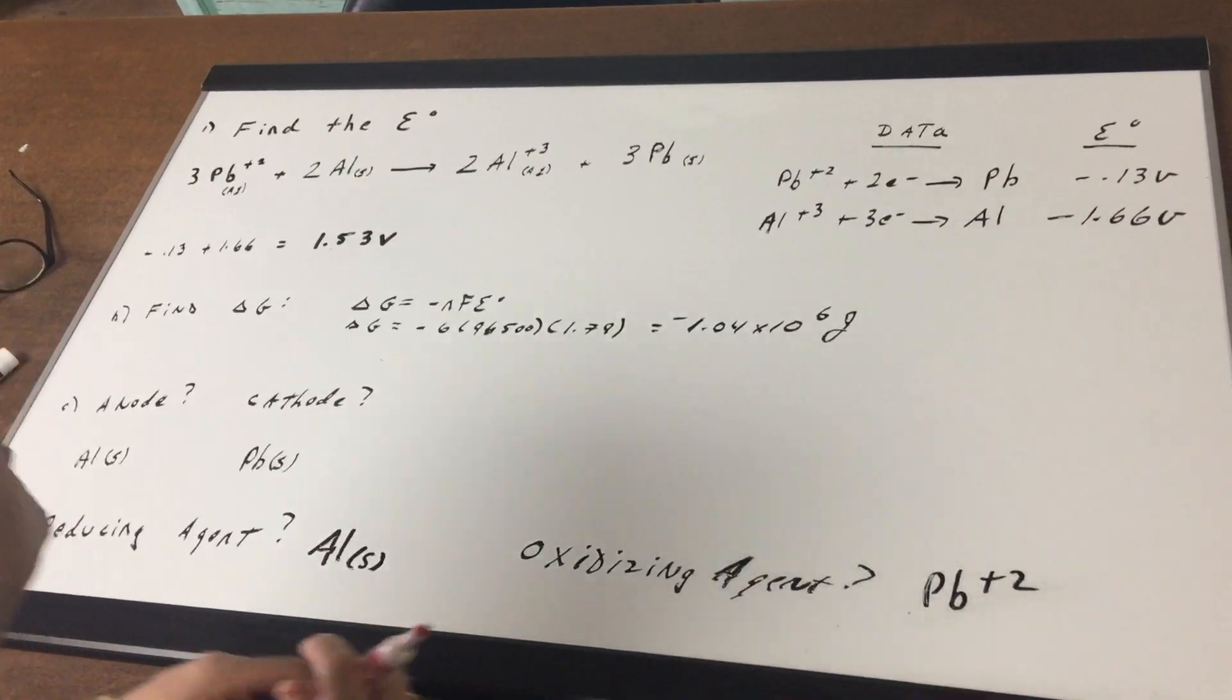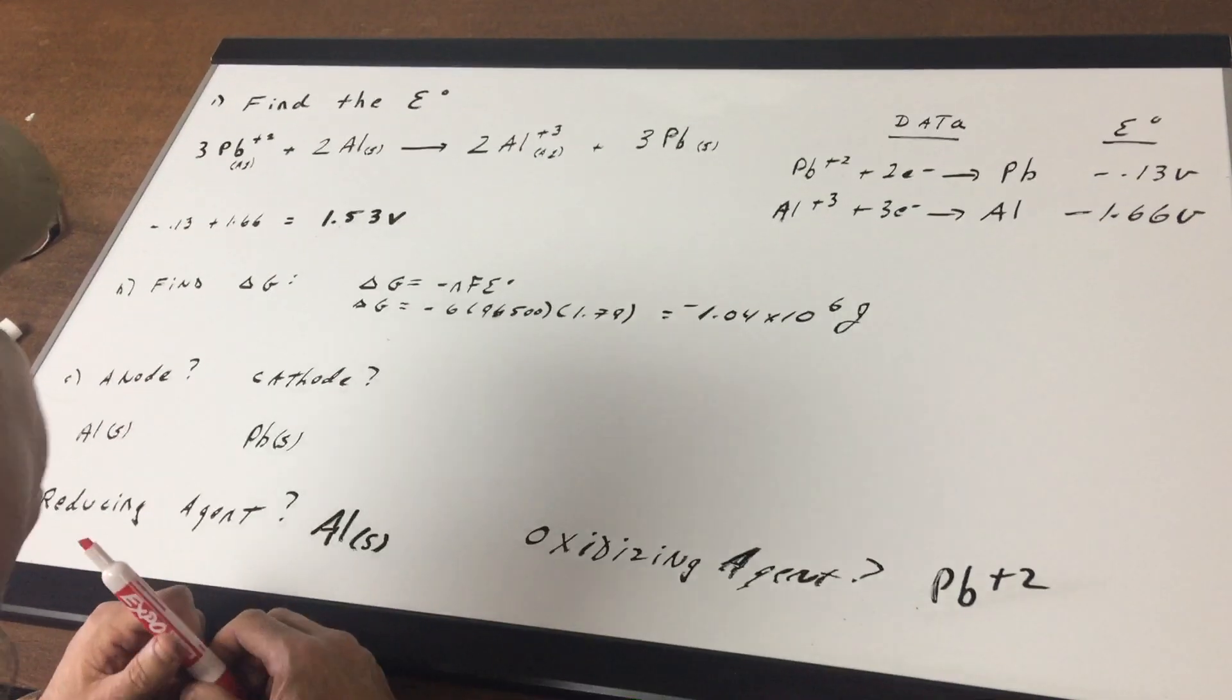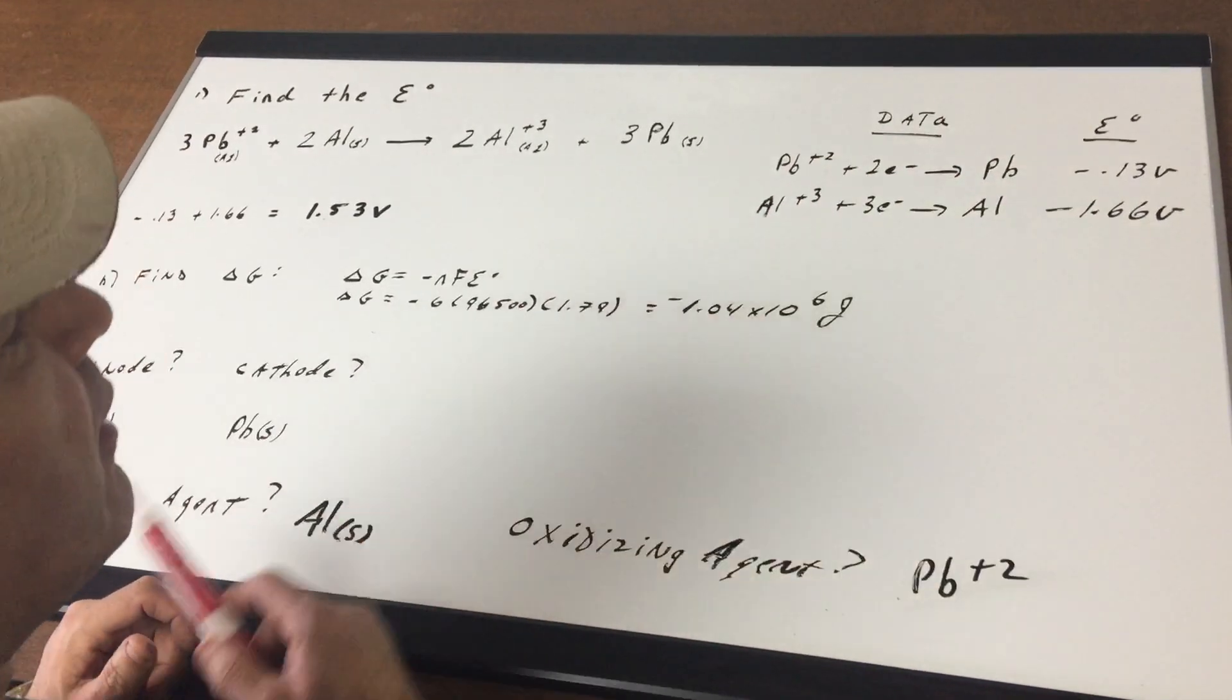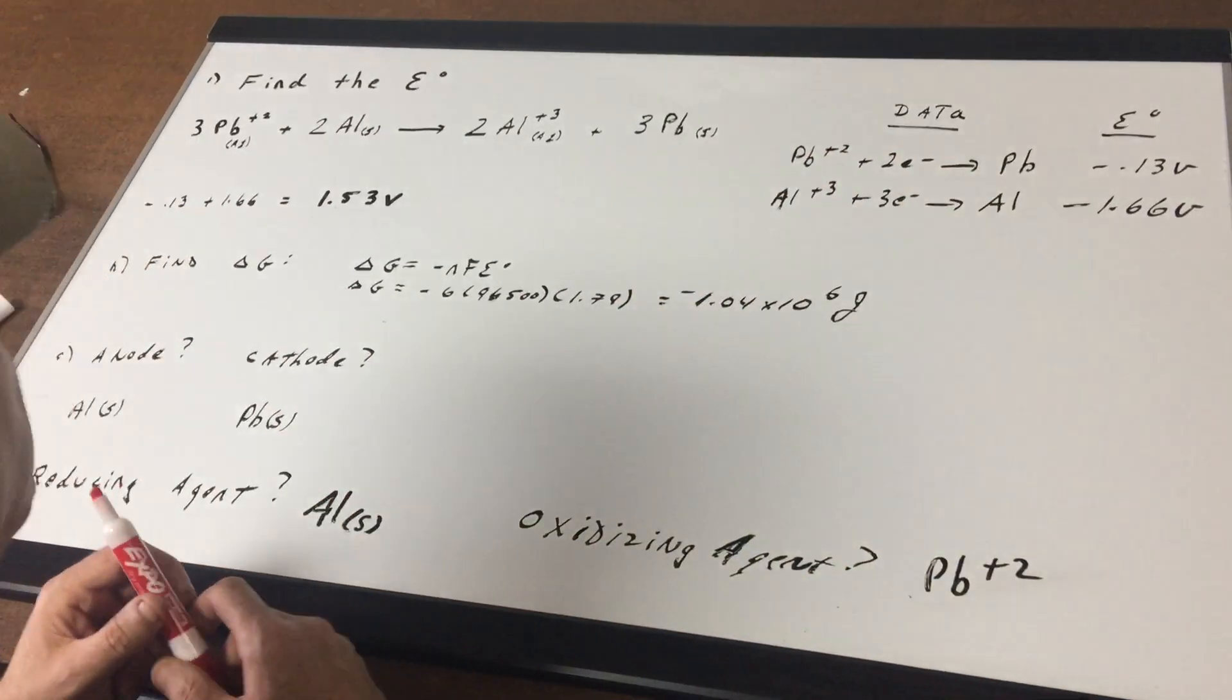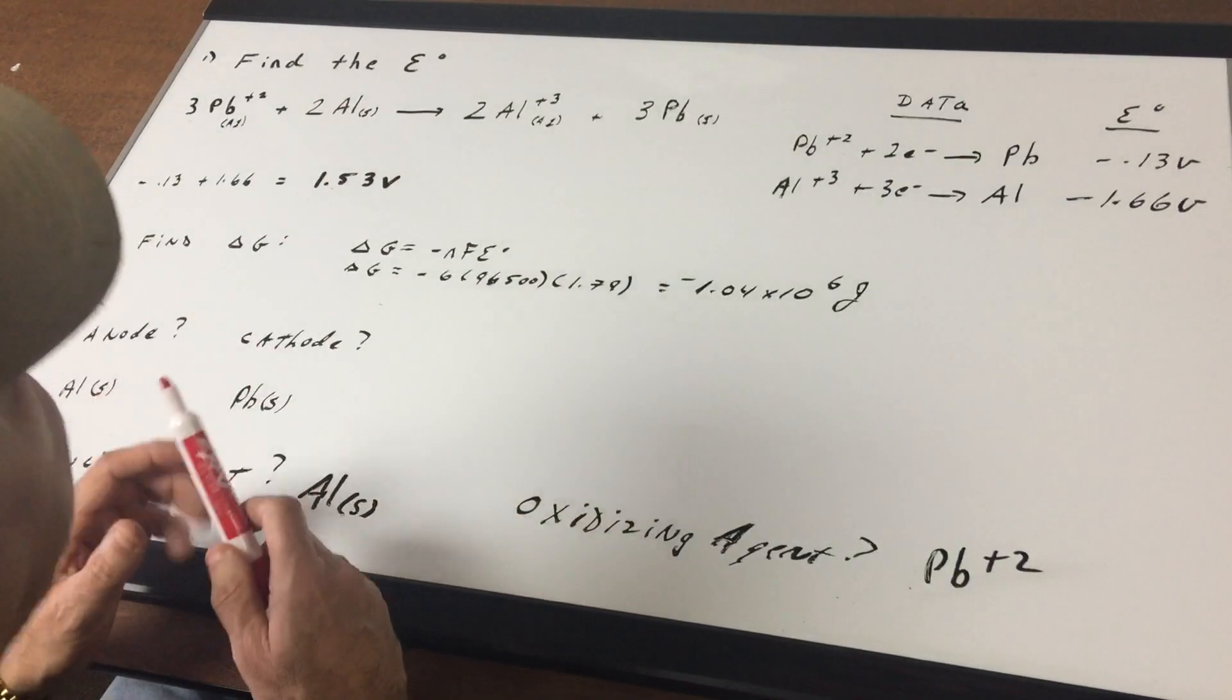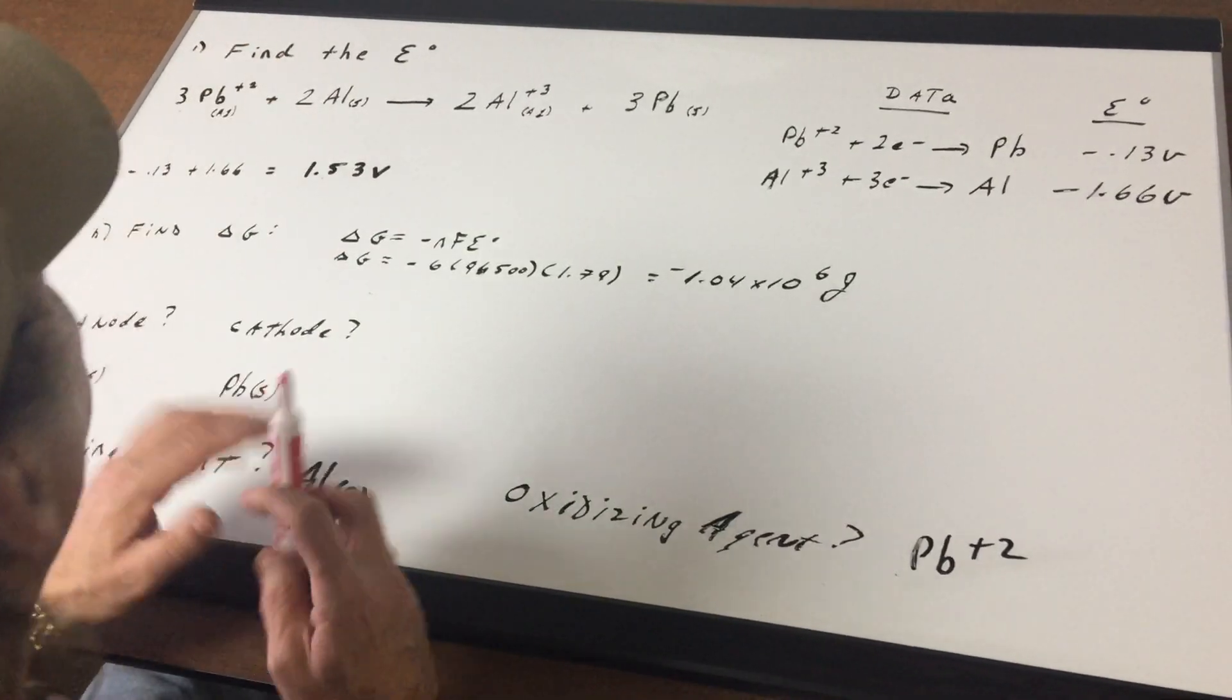The first question asks you to find what's called the cell voltage or the cell potential of a certain reaction. I give you a reaction where we have the lead cation reacting with aluminum to give the aluminum cation plus lead. The data are the reduction potentials because they're all written in terms of reductions. Now the first thing you need to understand is whenever you calculate an E0, ignore the coefficients. When you calculate an E0, this is an intensive property meaning it doesn't depend on the amount of material, so ignore the coefficients.